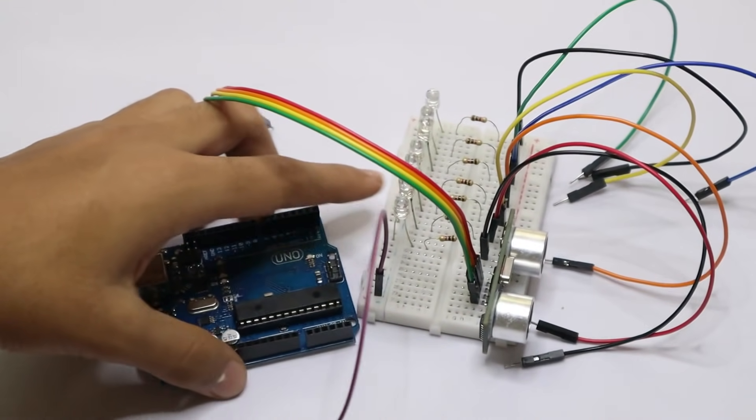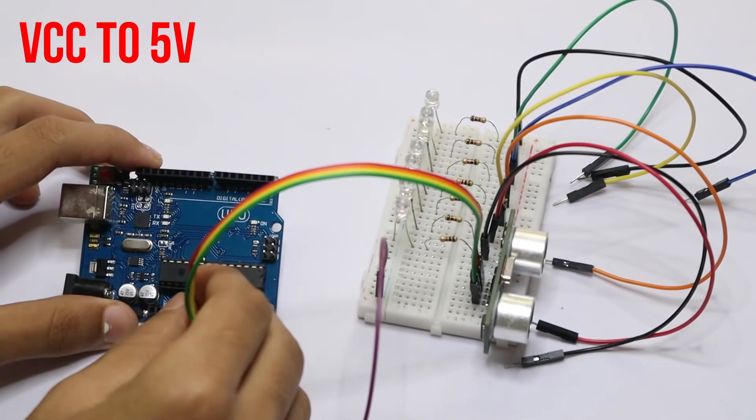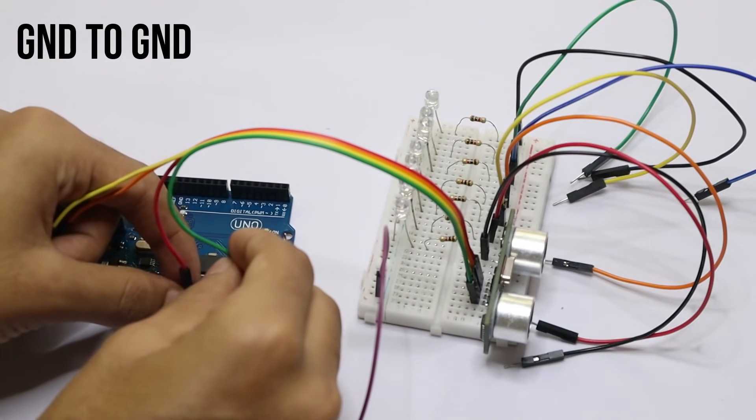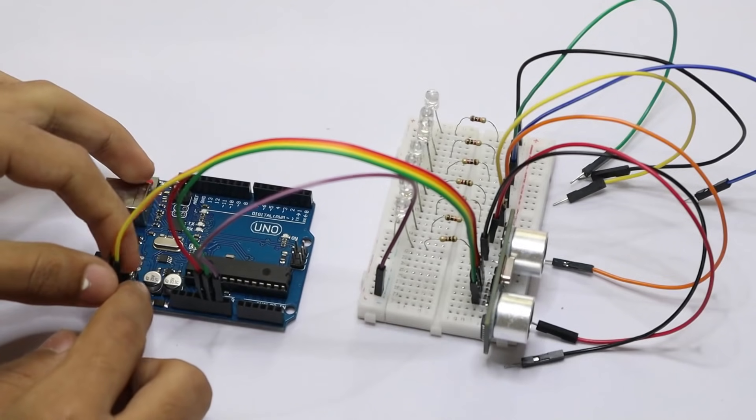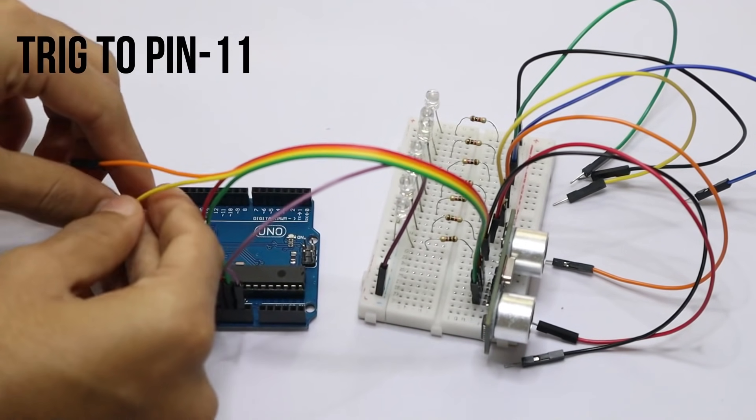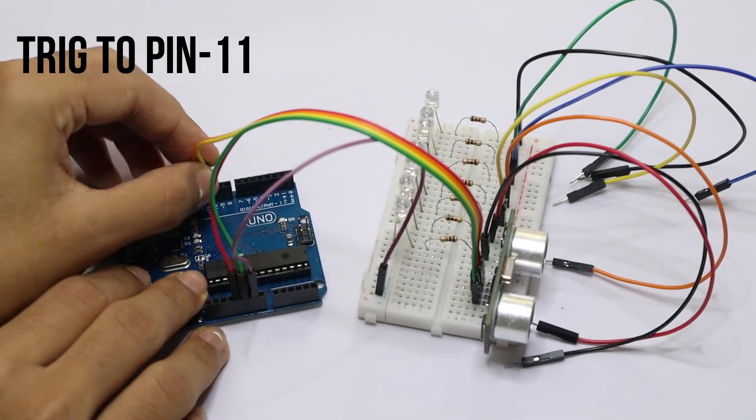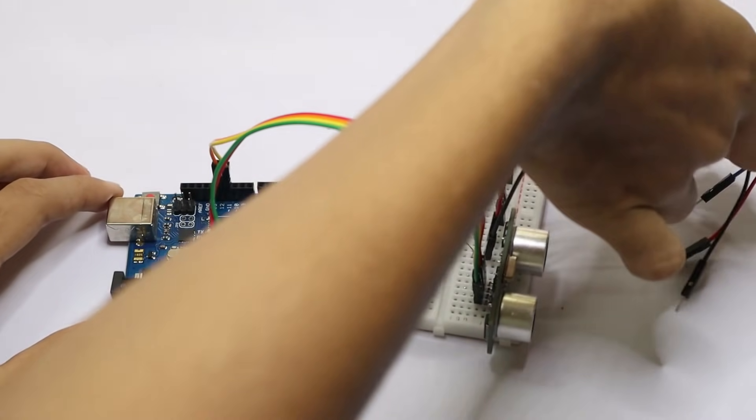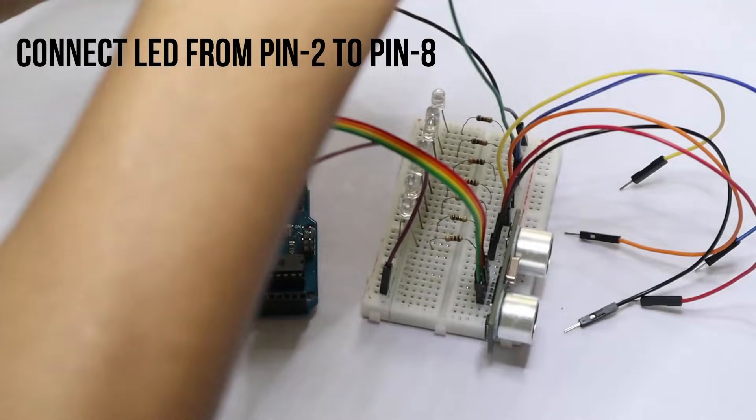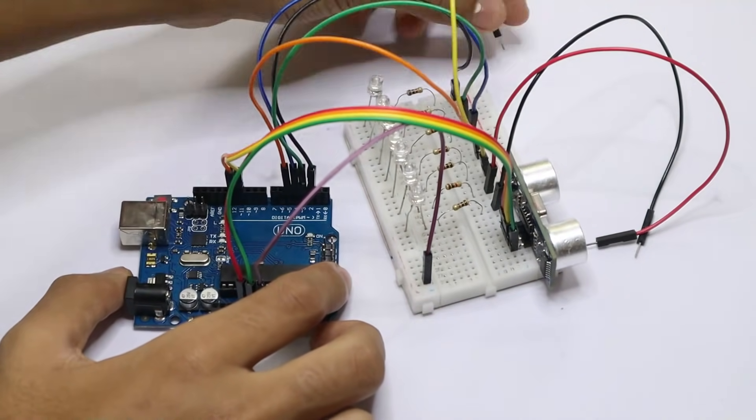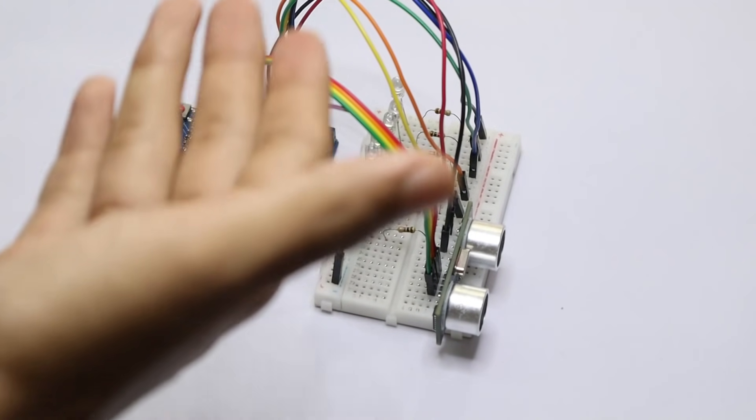Now take your Arduino Uno. Connect the VCC to 5 volt, the ground to the ground. Also this ground to the ground as well. Now connect your trigger pin to 11 and echo pin to 12. Now connect all your LED wires starting from 2 to 8. Now all the wiring is done.